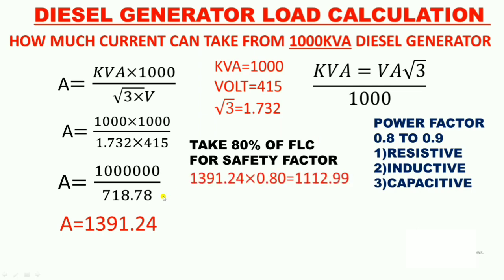If we take 80% of the full load current: 1391 × 0.80 = 1112 ampere, and this is the main answer. So, if an interviewer asks about the full load current of a 1000 kVA diesel generator, you can say the full load current is 1391 ampere, and the current you can safely draw with the safety factor is 1112 ampere.